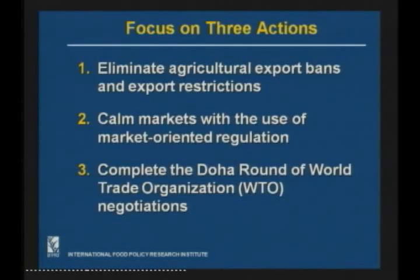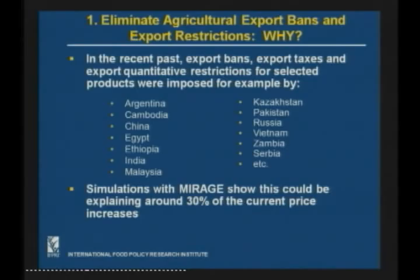What I am going to present is basically three points. The first one is to eliminate agriculture export bans and export restrictions, given they have had an impact on price increases in the last months. Second, to calm markets with the use of market-oriented regulation. And third, policies to complete the Doha round of World Trade Organization negotiations.